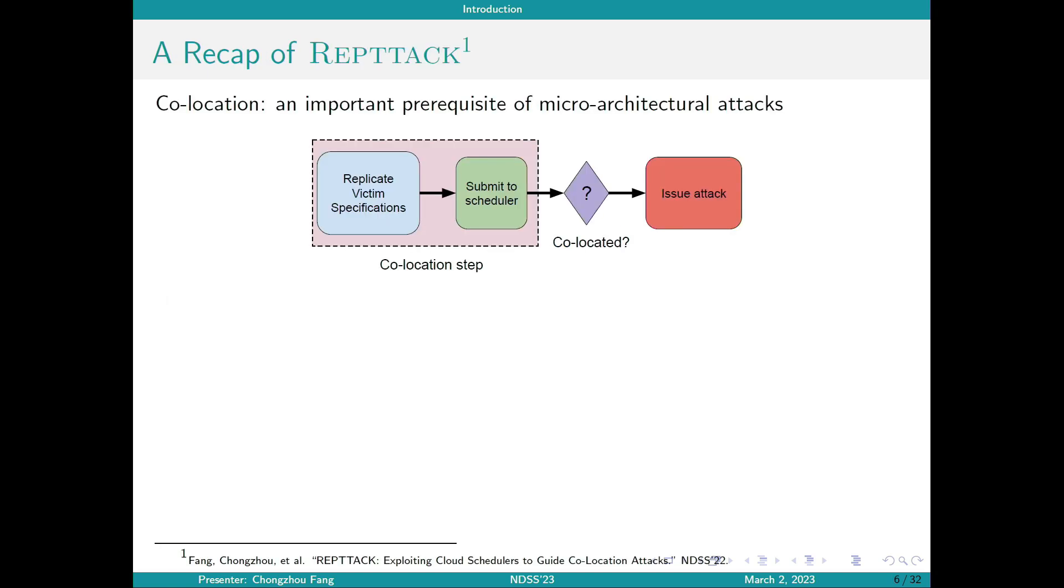So last year at NDSS, we proposed RepTech, which is an attack strategy targeting cloud schedulers. In that paper, we focus on an important prerequisite of microarchitectural attacks, which is collocation of victim and attacker instances, and provide a strategy to significantly increase the success rate of attackers. Our attack was based on a simple intuition. If the attacker is able to exploit the heterogeneity of the cloud infrastructure and narrow down the search space of collocation nodes, the success rate will be higher.